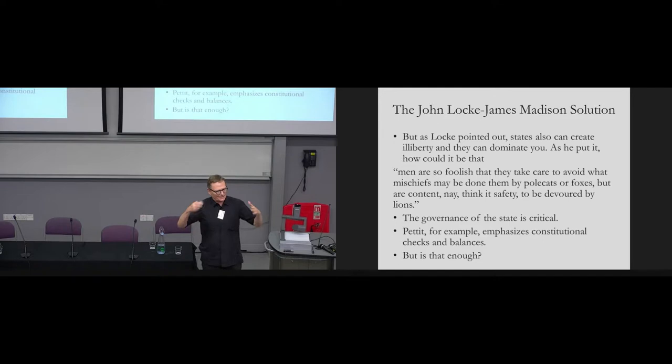Locke, of course, had a notion of institutional design. You need popular participation. You need checks and balances. He even talks about the separation of powers. And Pettit, when he talks about how do you achieve a society with non-dominance, he has the same idea. A kind of constitutional design problem. I put the John Locke, James Madison solution up here. There's been this notion in Western society that this is an institutional design problem.